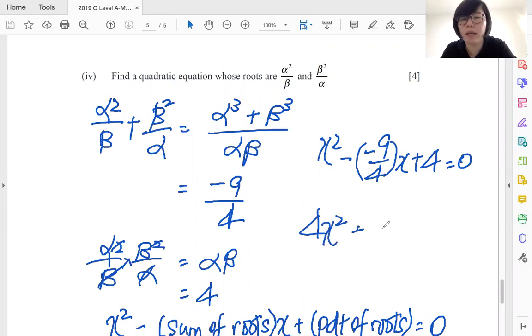You want to simplify it and make it nice by multiplying everything by four, so you give us four x square plus nine x plus 16. And this is the quadratic equation that we are looking for. I hope you find this video useful.